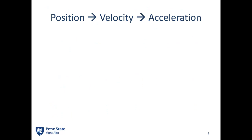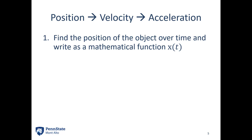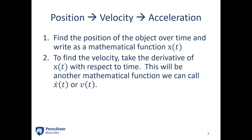Let's talk about going from position to velocity and then velocity to acceleration. We need to either be given the position function x of t, or given enough information to find it ourselves — such as positions at time equals zero, one, and two. Once I have x of t, to get velocity I simply take the derivative of x of t with respect to time. For example, if x of t equals t squared, the derivative is 2t, so the velocity function v of t equals 2t.